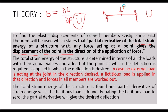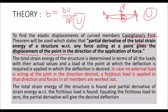The deflection will be in the direction of the point load. Since the point load is applied in the downward direction, the deflection will also be in the same direction. This deflection or displacement can be determined using the total strain energy — this is Castigliano's first theorem. If there is no external load acting at the joint in the desired direction, a fictitious load is applied in that direction and the forces in all members are worked out.